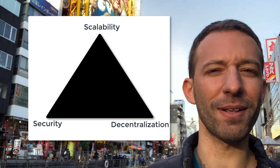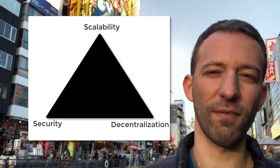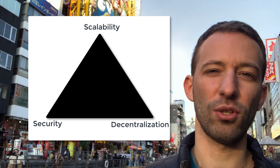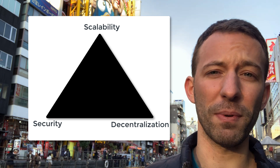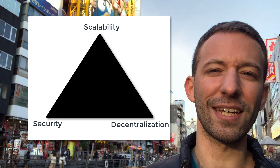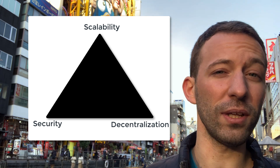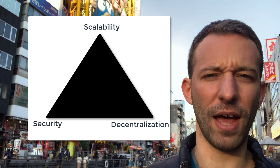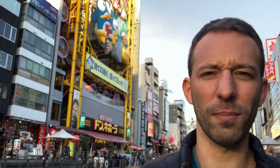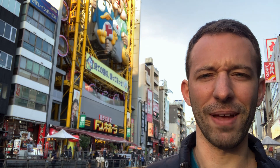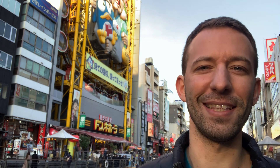The Blockchain Trilemma is a fundamental problem of blockchain that every blockchain developer needs to know. It basically states that out of three properties — decentralization, security, and scalability — a blockchain can only have two of them. How does this come about, and what are the consequences for existing blockchains like Ethereum and EOS? We'll see this in this video.